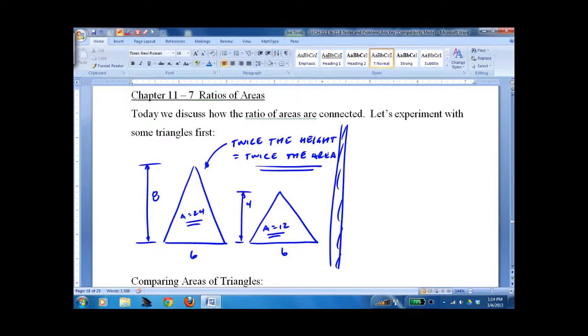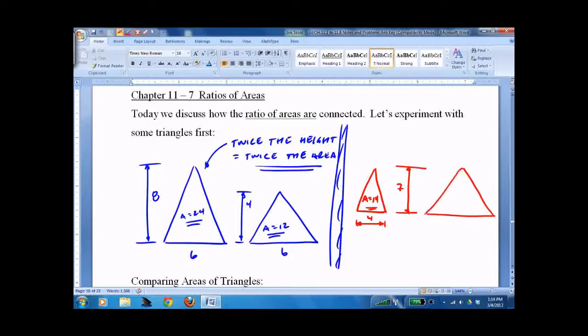We can do this also with the base. So we have a triangle here with a height of 7 and a base of 4, so the area equals 14. And then over here, same height but now the base is 8, so area equals 28. For this one we say twice the base equals twice the area.